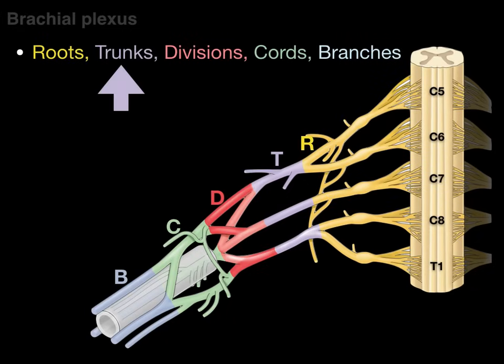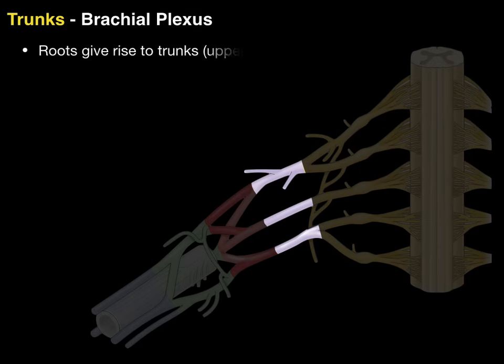Now let's talk about the trunks of the brachial plexus. Roots give rise to trunks: upper, middle, and lower trunk, sometimes known as superior, middle, and inferior. The C5 and C6 roots merge to make the upper trunk. The C8 and T1 roots merge to make the lower trunk. And the C7 root continues as the middle trunk — the only contribution to it.